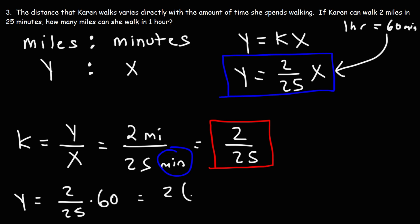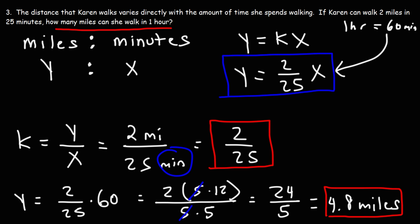So it's Y equals 2 over 25 times 60. Now 60, we could break that into smaller numbers. 60 is 5 times 12. 25 is 5 times 5. So we can cancel a 5. 2 times 12 is 24. So the answer is 24 over 5 as an improper fraction, which is 4.8. And Y is in miles. So the answer, if Karen can walk 2 miles in 25 minutes, she can walk 4.8 miles in one hour. So that's how you can use direct variation to answer questions like this.